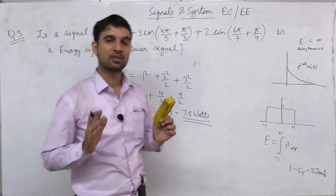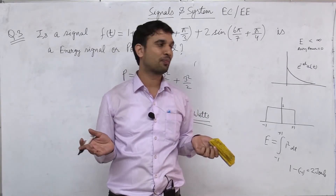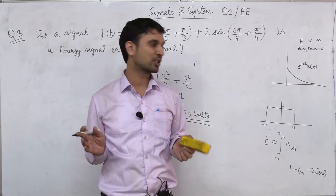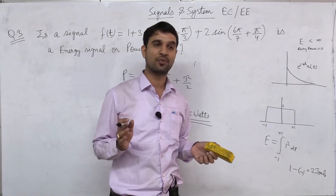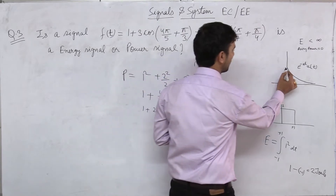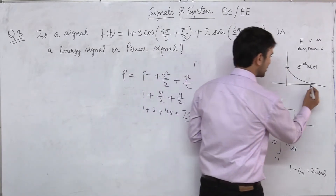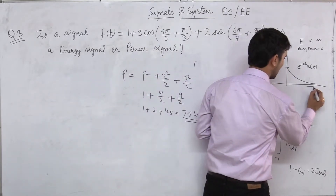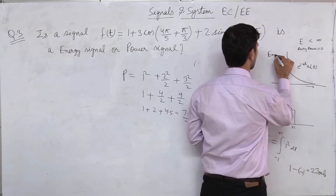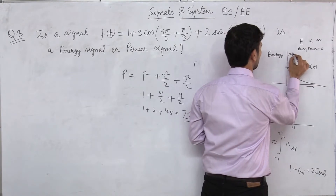All our signals which have infinite duration, or whose amplitude is also infinite, are power signals. And those signals which have finite amplitude — that means the amplitude is finite — and as t tends to infinity, the amplitude becomes zero, those are energy signals.